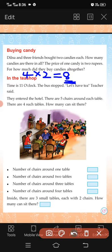The price of one candy is two rupees. So eight candies, eight twos are sixteen. They paid sixteen rupees in total.